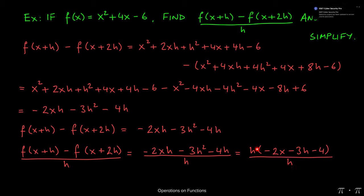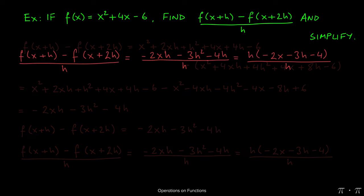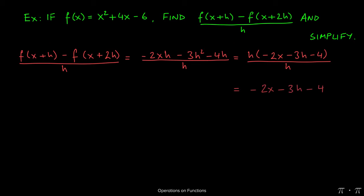Now because I have a product here, I can divide this h with this h, which would just yield us negative 2x minus 3h minus 4. And that's our answer: that whole expression simplifies to negative 2x minus 3h minus 4.